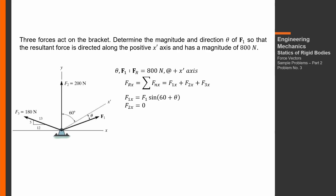F2x, the x-component of the second force, is 0. For the x-component of the third force, based on the triangle ratio, we use 12 over 13. The third force F3 uses the same cosine ratio. So, F3x equals (12/13) times 180, directed to the left.